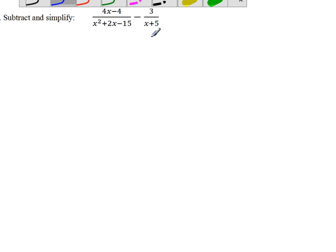To find the common denominator, first let's see if we can factor any terms. Especially for the first term, we can factor a lot. So let's look at the numerator. 4x minus 4, we can factor out a 4, so we get 4(x-1).